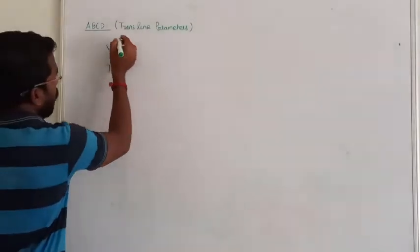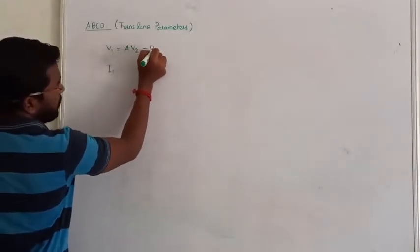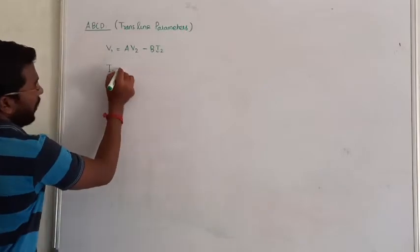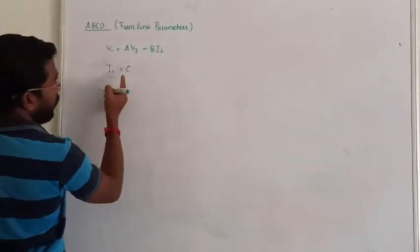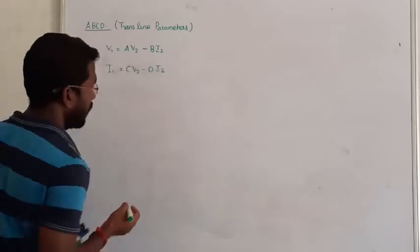V1, I1 equal to, so V1, I1 equal to A into we have to consider V2 minus B into I2. Similarly, if we calculate the layer of second one, that is C into V2 minus D into I2.